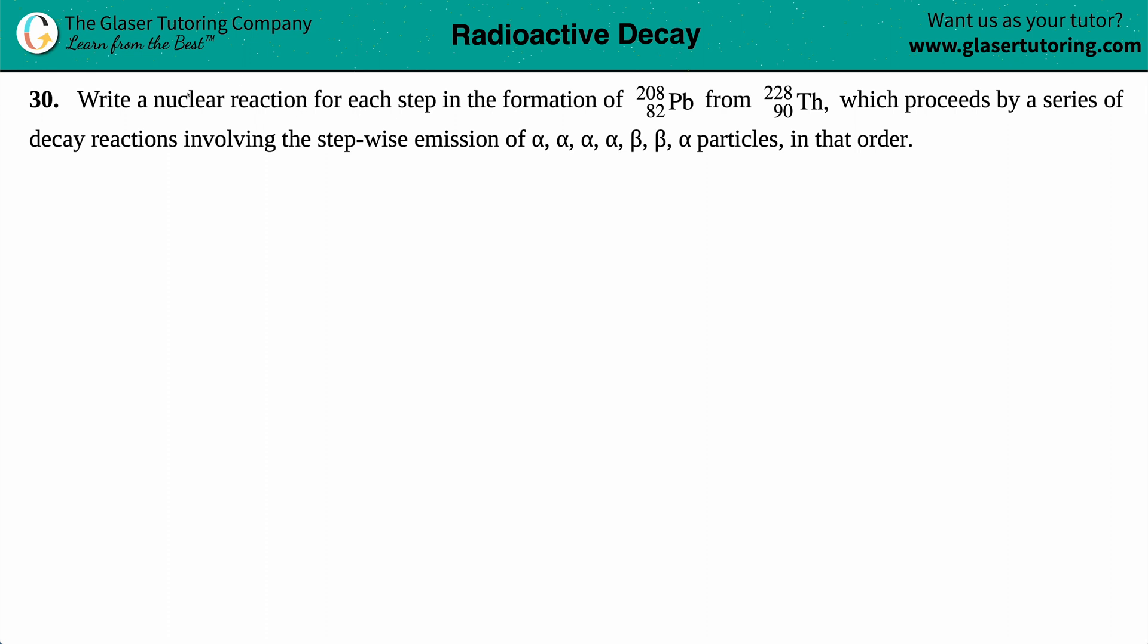Number 30: Write a nuclear reaction for each step in the formation of Lead-208 from Thorium-228, which proceeds by a series of decay reactions involving the stepwise emissions of alpha, alpha, alpha, alpha, beta, beta, alpha particles in that order. So it seems like we have a long slew of steps with different emissions.